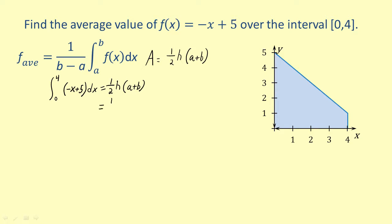Substituting for h, a, and b, we get 1 half times 4 times the quantity 5 plus 1. Simplifying, we get 12.